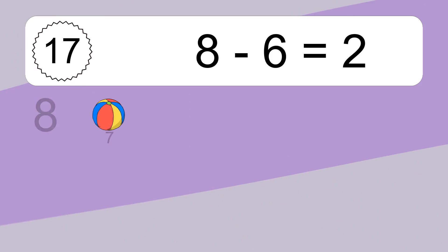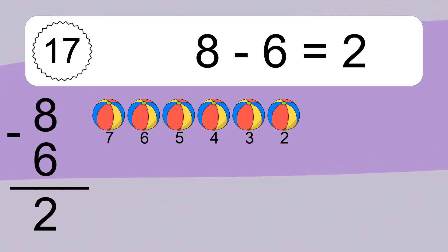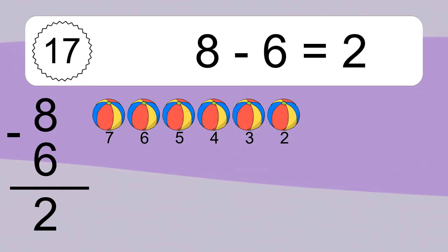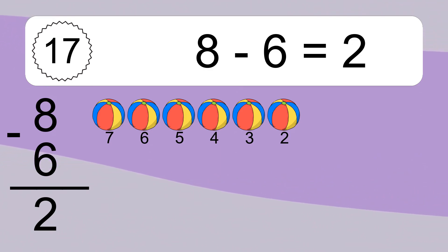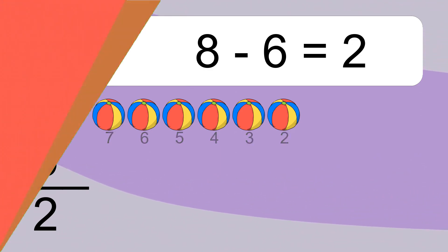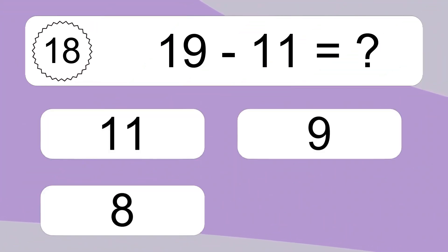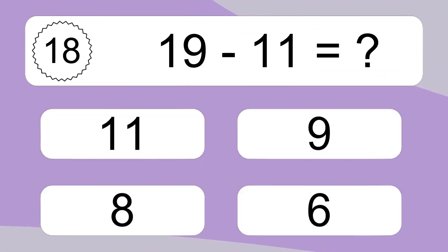8 minus 6 equals what? 8 minus 6 equals 2. Let's count it: 7, 6, 5, 4, 3, 2.